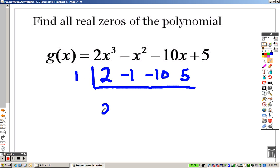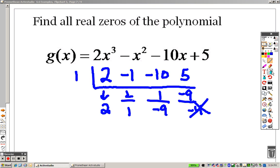I'm going to start with 1. So I bring down the 2, 2 times 1 is 2, I add it, I get 1. 1 times 1 is 1. I add it to get negative 9. Negative 9 times 1, negative 9. No, that's not going to give me 0, right? That's negative 4. I want a 0 there. So let's try it again.